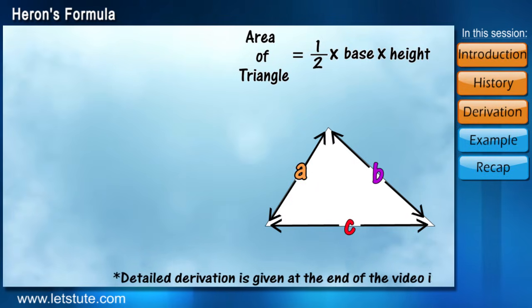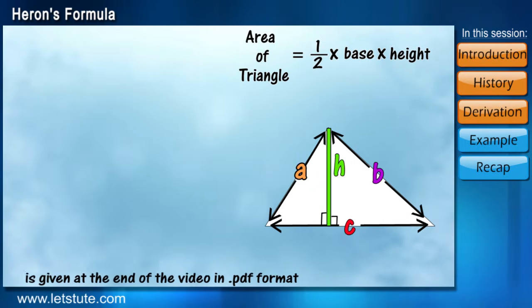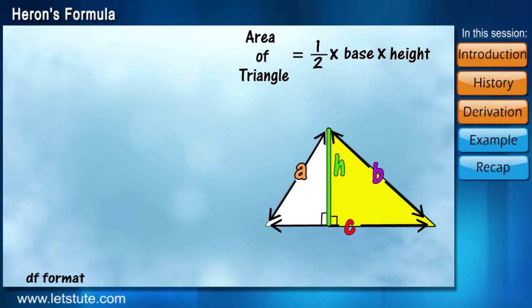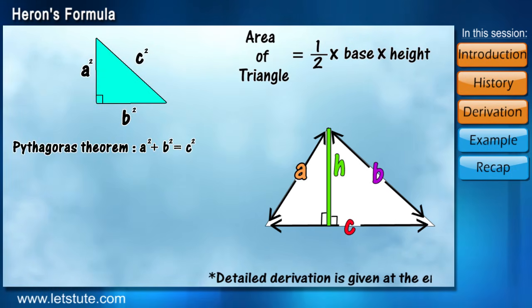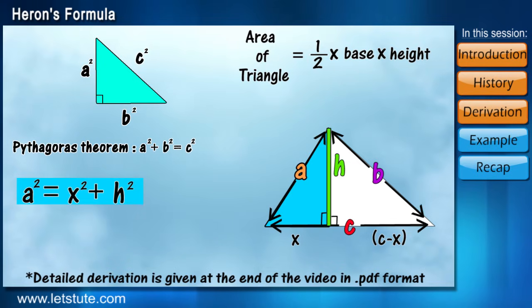Here we draw a perpendicular height and say it as h. Now, we have two right-angled triangles. And as soon as we see right-angled triangles, the first thing that comes into the mind is Pythagoras theorem. So, let's apply Pythagoras theorem in both these triangles.